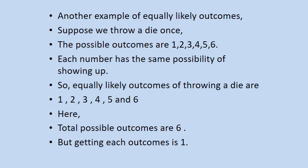And therefore here the total possible outcomes are 6. But every time we throw a die, we will get only 1 — it may be 1, 2, 3, 4, 5 or 6. So that is how throwing a die works.